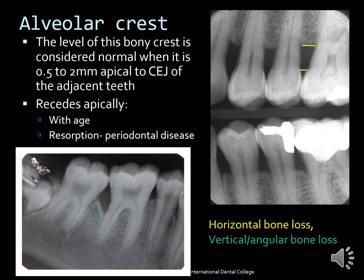The actual bone level is seen to be much more apical than the normal CEJ. Anywhere between 0.5 to 2 mm of the CEJ is still considered as a normal alveolar bone crest; anything below that is considered bone loss. Recession of the alveolar crest generally happens with age and also when there is resorption in case of periodontal disease. The molar radiograph here indicates vertical or angular bone loss — when bone is lost at an angle, this is called vertical or angular bone loss. These radiographs help you differentiate horizontal bone loss from vertical bone loss.